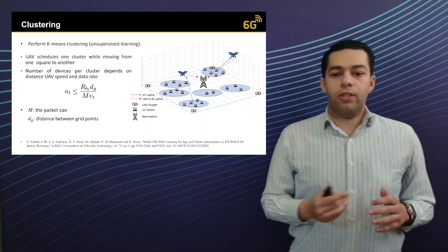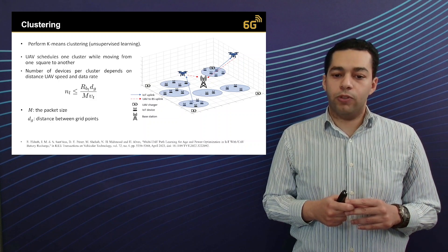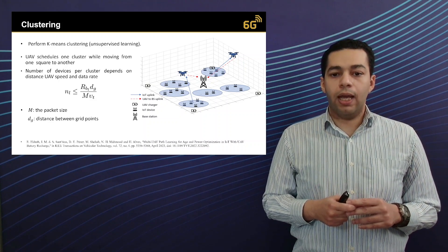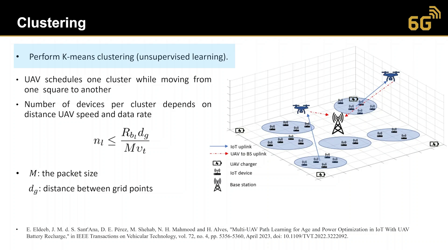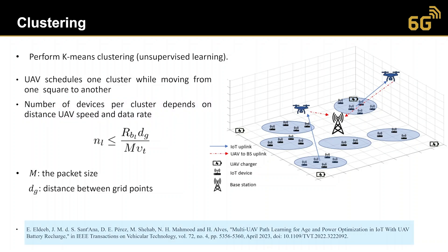To solve the same problem for a higher number of devices, we perform clustering using k-means clustering, an unsupervised learning approach. The number of devices per cluster is determined according to the transmission rate, packet size, and the velocity of the UAV. This paper was published in IEEE Transactions on Vehicular Technology. In this paper, we have multiple clusters of devices and multiple drones collecting information from the grounded devices.